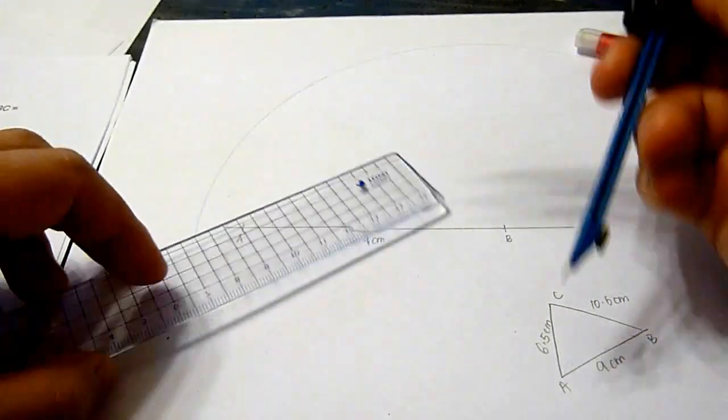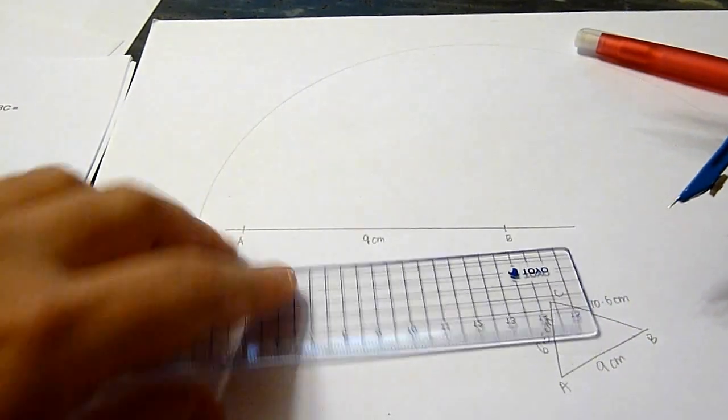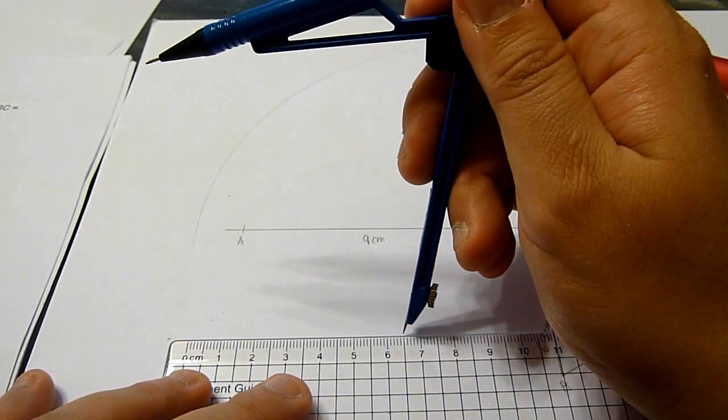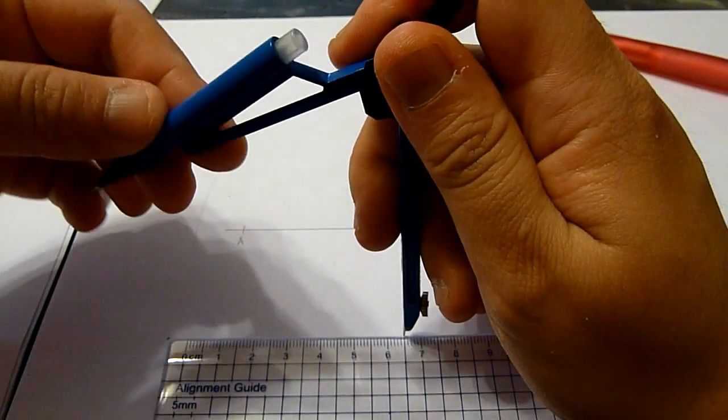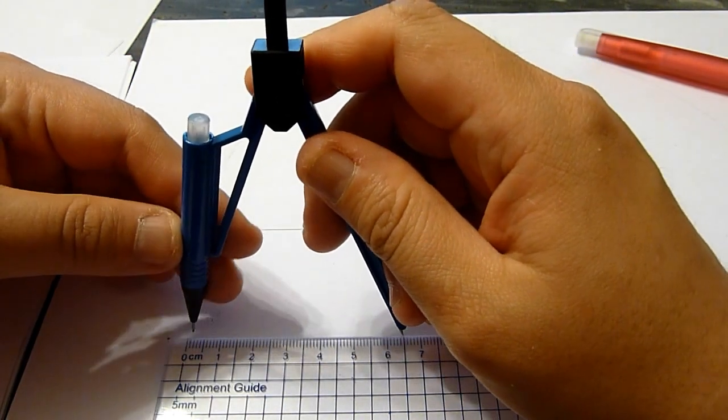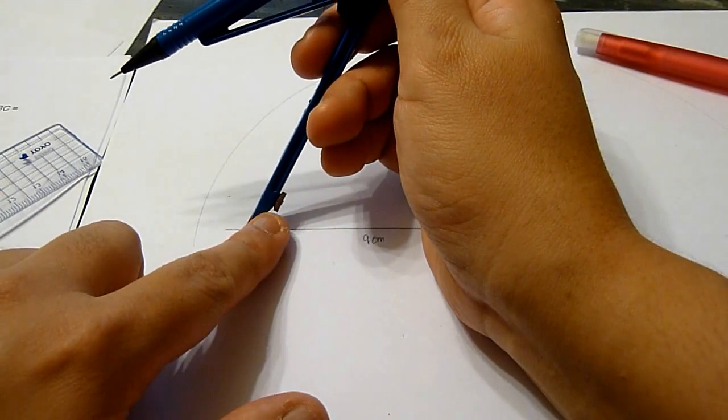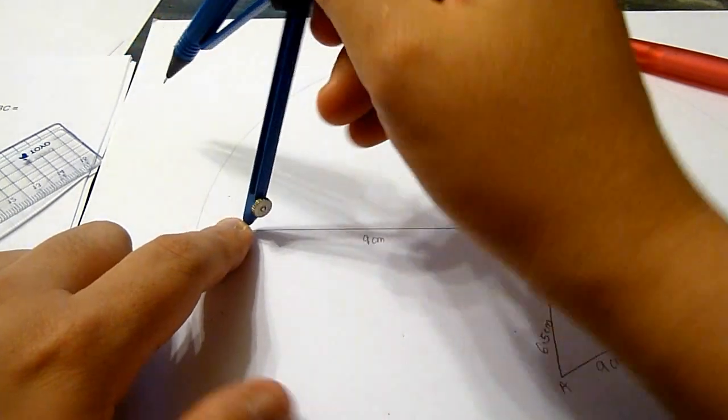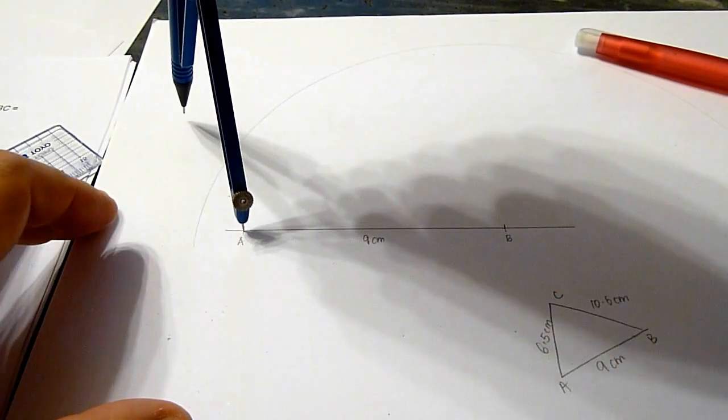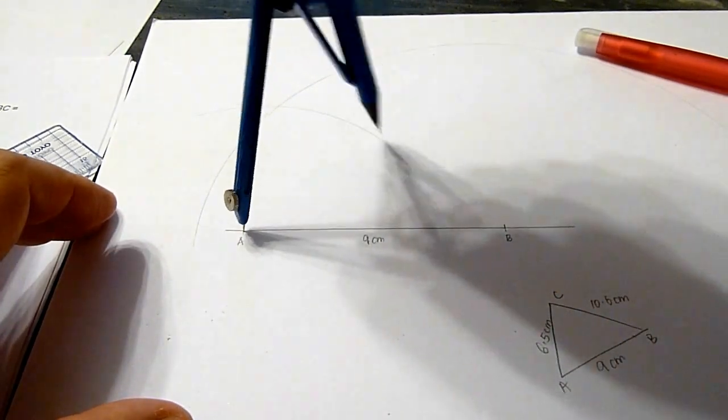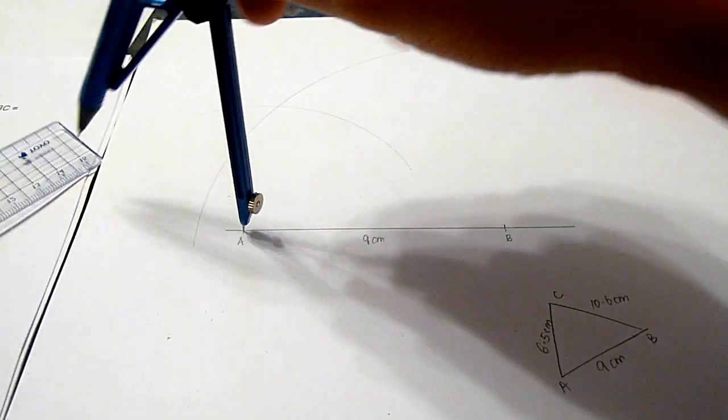Next, AC measures 6.5 cm. Similarly, this arc would be 6.5 cm away from point A.